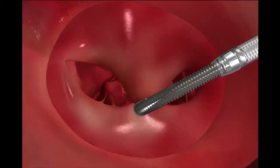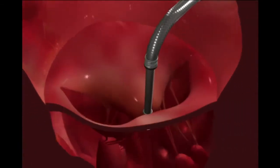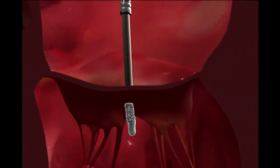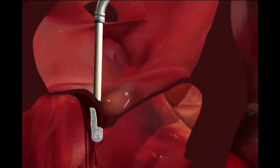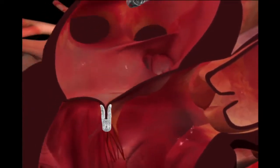The double orifice opening allows blood to flow on both sides of the clip. The grasp and MR reduction are assessed before the clip is deployed. The catheters are then removed.